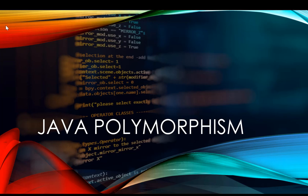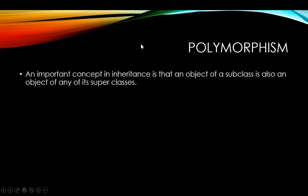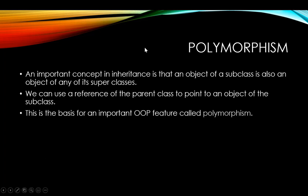In this video, we will look at an important concept in object-oriented programming, which is polymorphism. When we talked about inheritance before, we said that we have an is-a relationship between the subclass and the superclass. So an object of the subclass is also considered an object of any of its superclasses. This will allow me to use a reference of the parent class to point to an object of the subclass, and that is the basis of polymorphism.